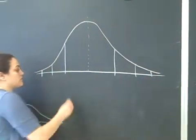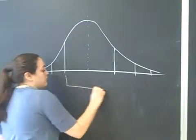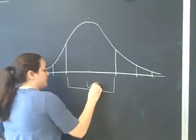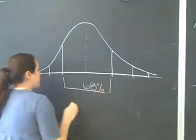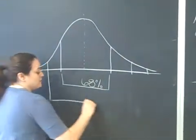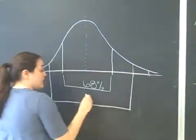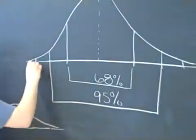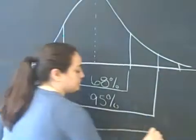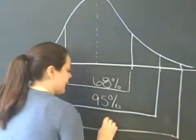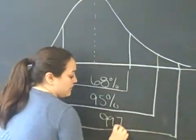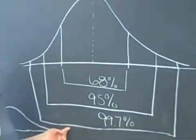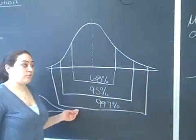It has also been determined that between the first standard deviations it's 68%, between the second standard deviations it's 95%, and between the third it's 99.7% of the data. This is known as the 68-95-99.7 rule.